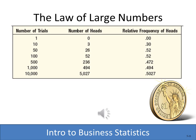Here you see an example of the Law of Large Numbers at work. The first time you flip a coin, if you didn't get heads, you would assume a 0% chance of getting heads. But if you tried it 10 times, 50 times, 100 times, 500 times, 1,000, and eventually 10,000 times, you would see that the more times you try the experiment, the more likely you are to approach the true probability of that event.